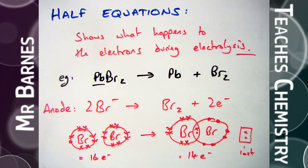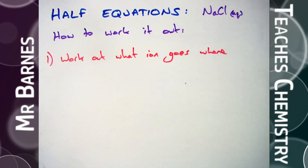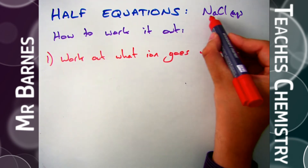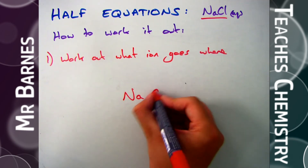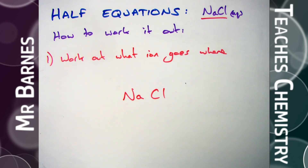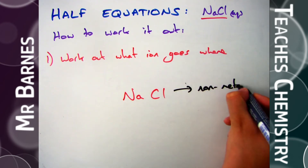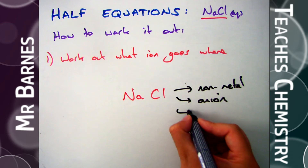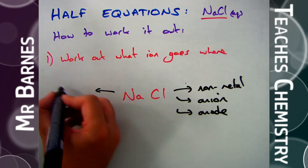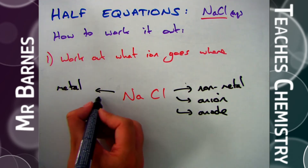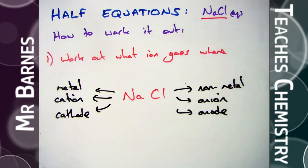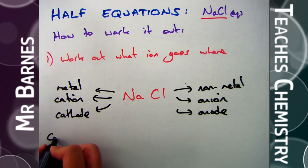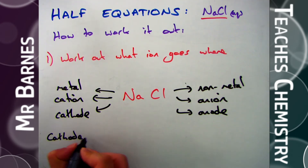Now I'll go through a step-by-step guide of how to write half equations. Step one: figure out which ion goes where. Chlorine is a non-metal, so non-metals are anions and will go to the anode. Sodium is a metal, therefore it's a cation and will go to the cathode. Once you know which ion is going to which electrode, it's easy to figure out the charge.